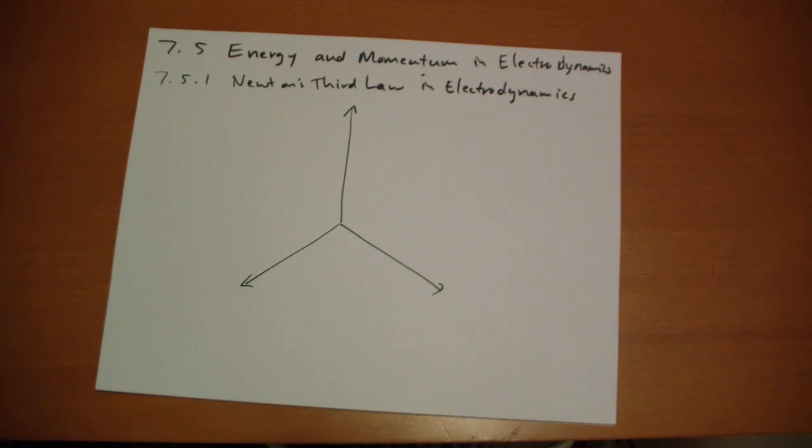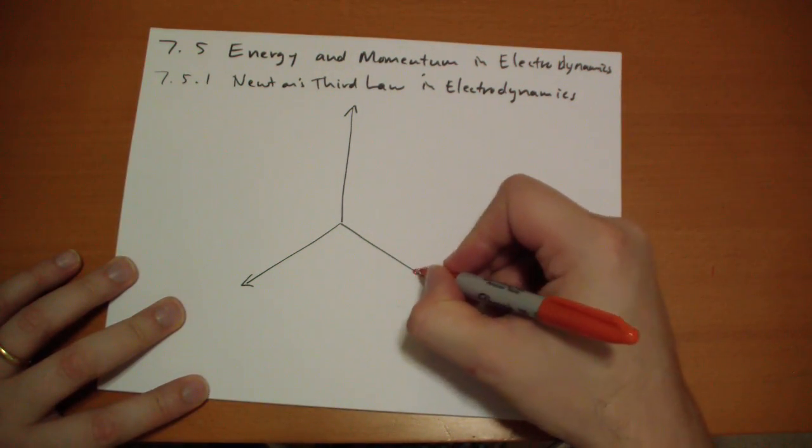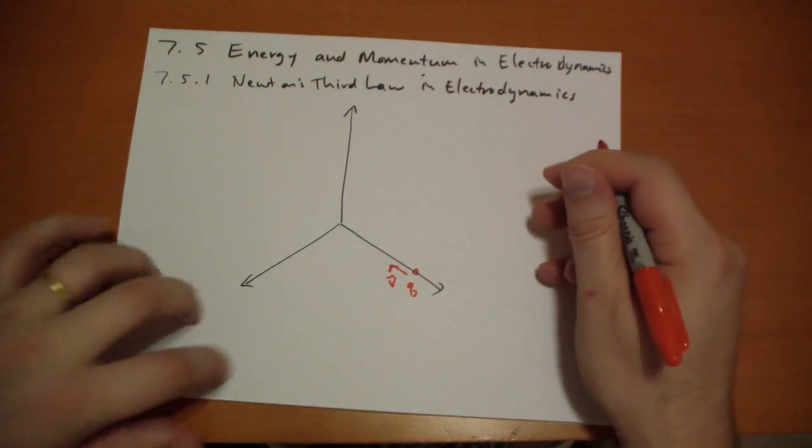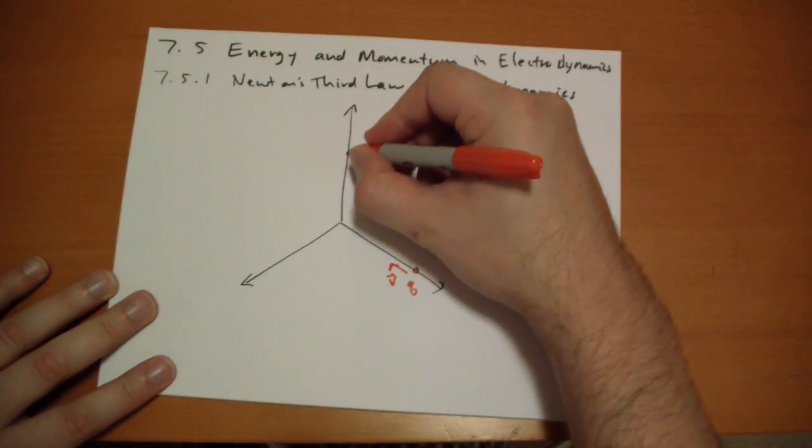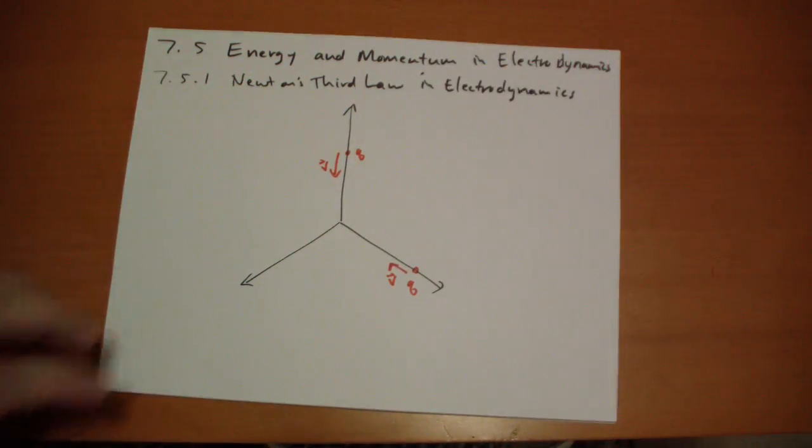And we have basically train tracks where we have a boxcar full of charge moving with the velocity along the x-axis, this direction. And then we have another charge up here, roughly the same distance away, same charge, moving with the same velocity.